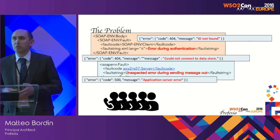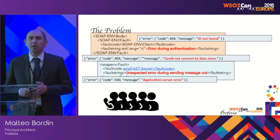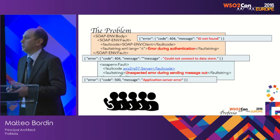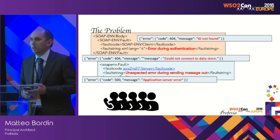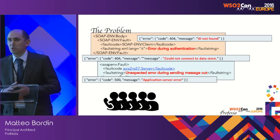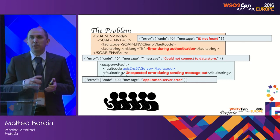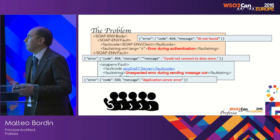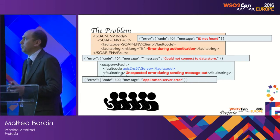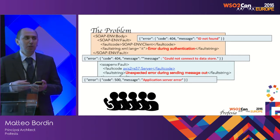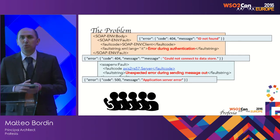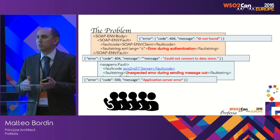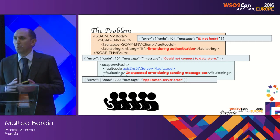We can start with the use case. The use case we would like to present today is a real use case that we have implemented for our customer, and it is an iterative incremental use case. The main problem we have with the customer is when we install and run the SOA application, we get this kind of error — but what is not working, and where is the problem?